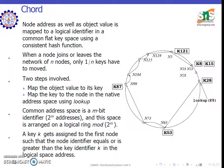Chord is a model that acts as both a logical identifier and an object value. It is a logical identifier which is used for the common flag case page for hash function. There will be two steps: map the object value and map the key to the node in a native order space.